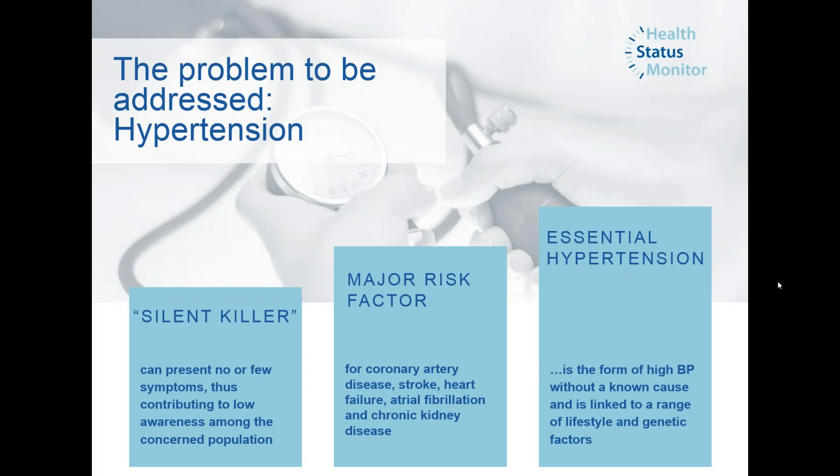Why hypertension? Because it's a disease that the procurers and the buyer group of the project are dealing with. Hypertension is a silent killer — it can present no or few symptoms and contribute to low awareness among the affected population. It becomes an even more life-threatening risk factor for people with comorbidities, like those with coronary artery disease, stroke, heart failure, chronic kidney disease. Essential hypertension is linked to lifestyle and genetic factors, for example, lack of physical activity, an unbalanced diet, smoking, salt intake, and alcohol consumption.